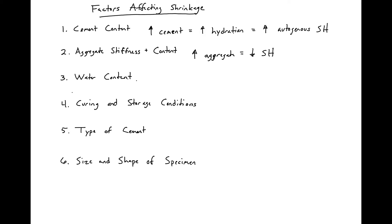The water content is also going to affect shrinkage. If we have an increased water-to-cement ratio, this is going to result in a more porous concrete. We'll have a higher porosity, which is going to result in the water being able to move around the concrete more easily, and thus have an easier time leaving the concrete — so we'll have increased drying shrinkage.